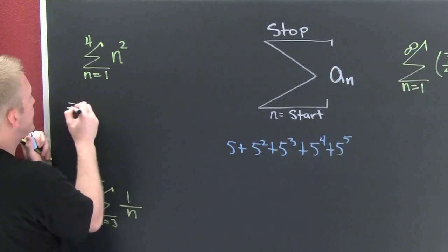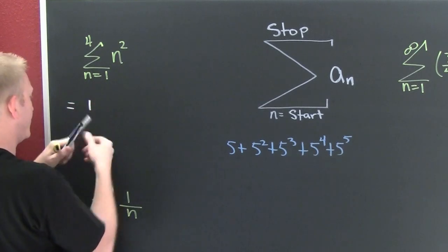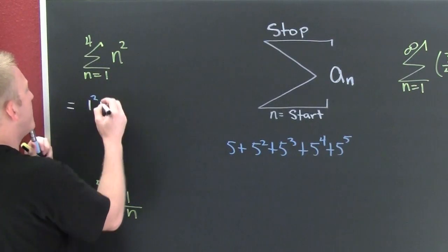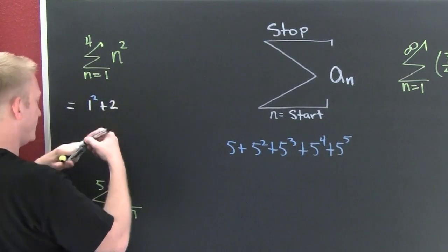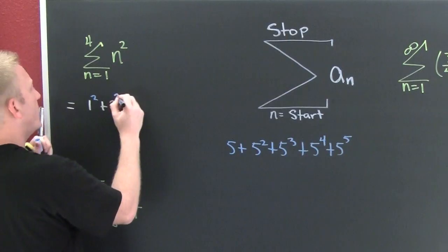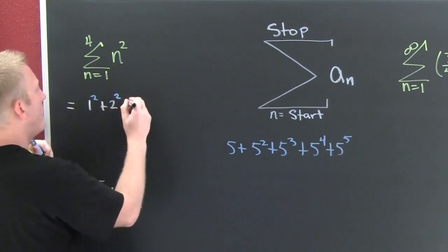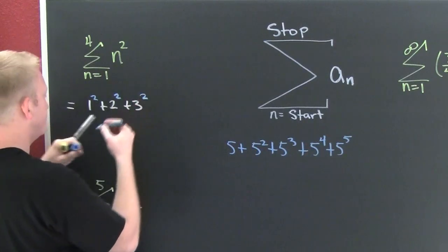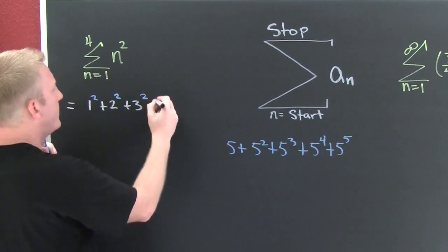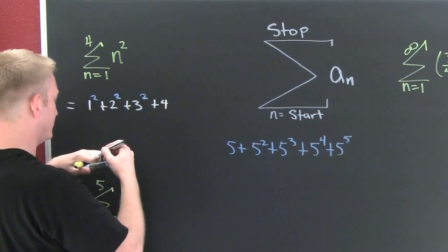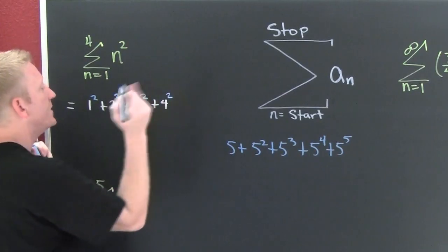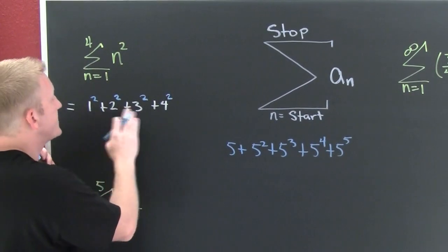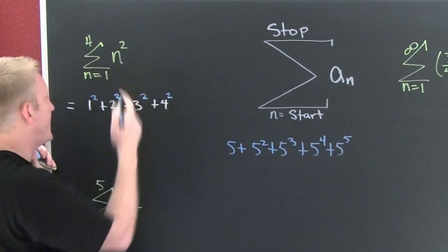This is the same as one squared plus two squared plus three squared plus four squared. Now here I see I have one thing changing from term to term and it's the base indicated by that n.